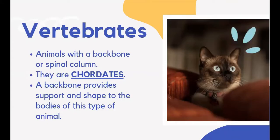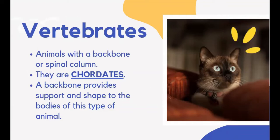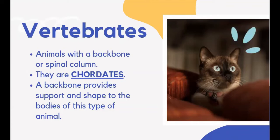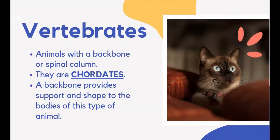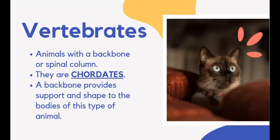Animals with a backbone or spinal column are vertebrates, also called chordates. The backbone provides support and shape to the bodies of these animals and houses the spinal cord. Fishes, amphibians, reptiles, birds, and mammals are vertebrates.